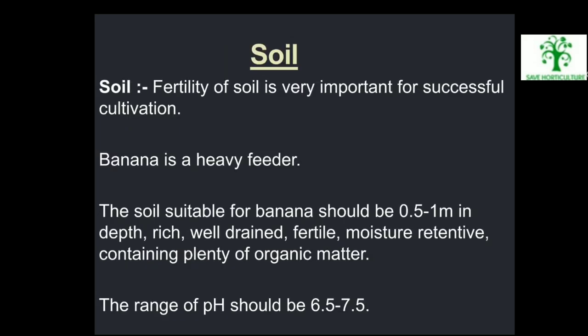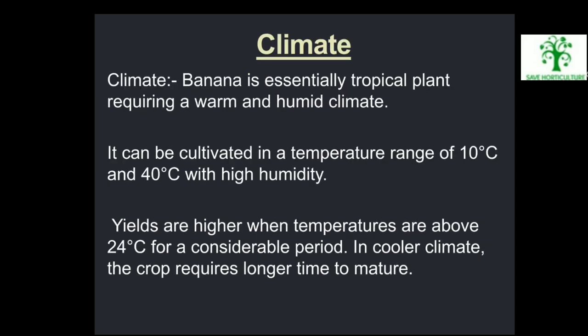Soil: Fertility of soil is very important for successful cultivation. Banana is a heavy feeder. The soil suitable for banana should be 0.5 to 1 meter in depth, rich, well-drained, fertile, moisture-retentive, containing plenty of organic matter. The range of pH should be 6.5 to 7.5.